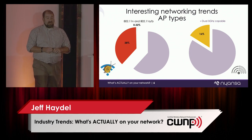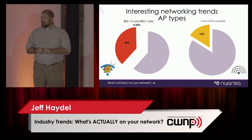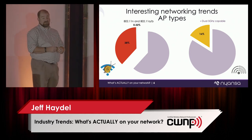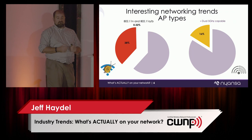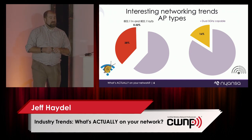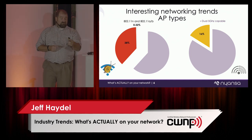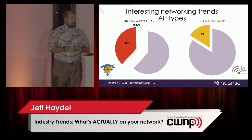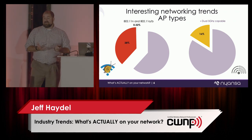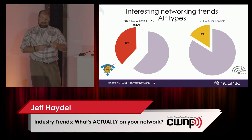Now let's look at the Lamborghinis and Ferraris. Last year, dual 5 GHz or SDR was the hotness. Well, 16% of the access points I'm seeing in the network today — out of that half million — are dual 5 GHz. I'm a big advocate of this concept; it has a big play in high-density environments. But not even a fifth of the network is actually out there running that type of networking today. So we've got a whole lot of Toyota Celicas and not that many Lamborghinis.